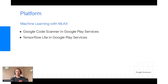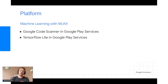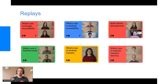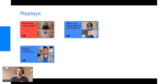Pour le Machine Learning, l'idée c'est de réduire la taille de vos applications en rajoutant des services dans les Google Play Services. Aujourd'hui Google Code Scanner et TensorFlow Lite sont dans les Google Play Services — ils ne nécessitent plus d'être embarqués dans vos applications, ce qui va alléger leur poids. Des talks sont disponibles sur l'accessibilité, le multi-device, les médias, la caméra et le machine learning.